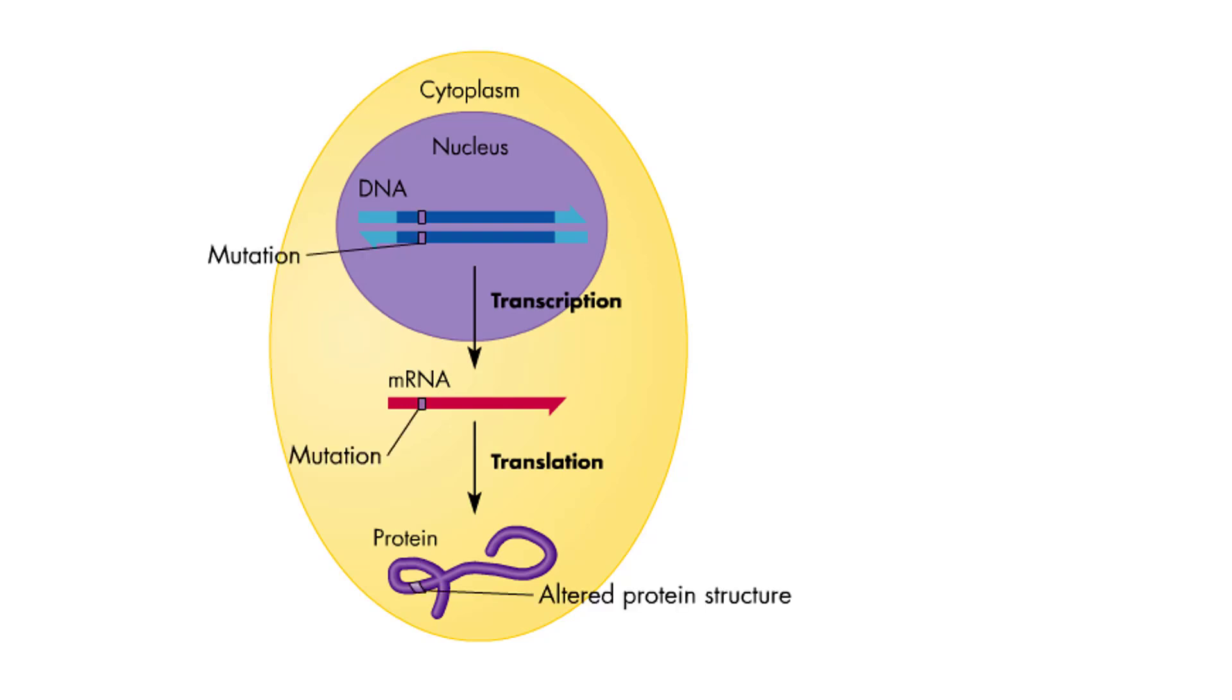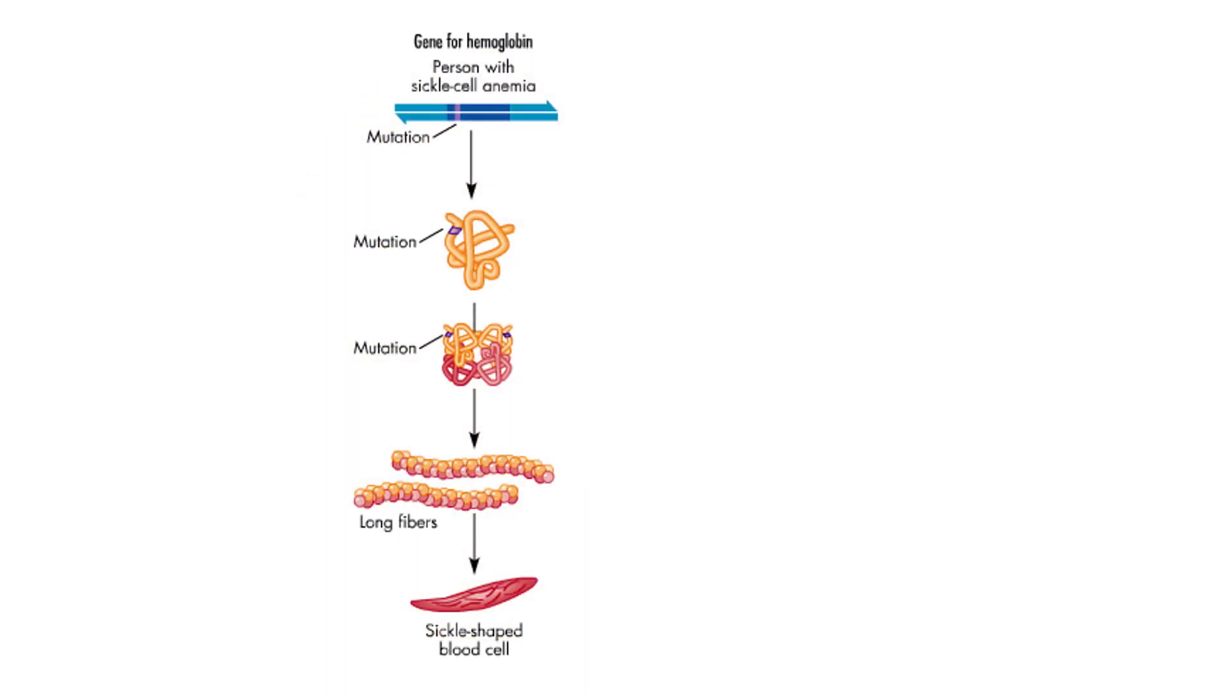Such changes can sometimes lead to severe diseases. For example, a single mutation in the gene for hemoglobin causes sickle cell anemia. Thousands of different diseases derive from mutations in thousands of different genes.